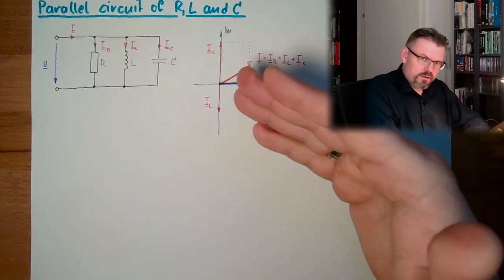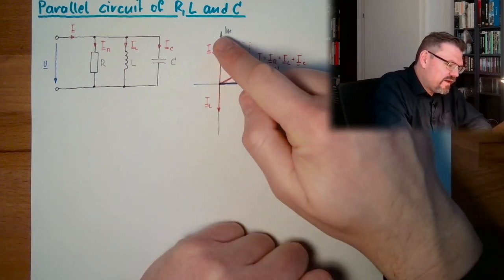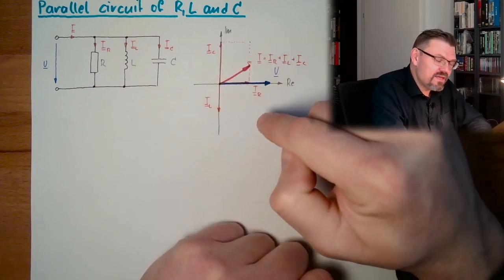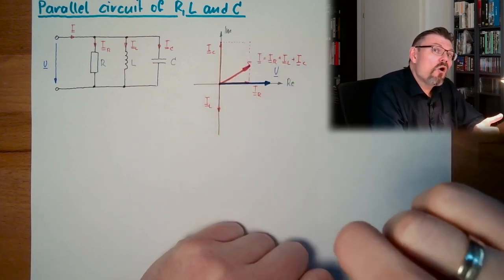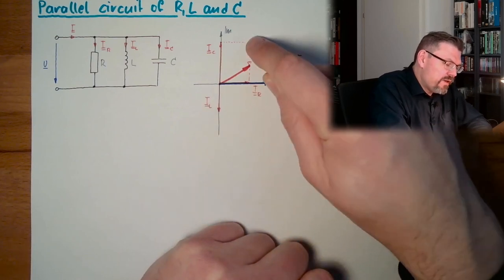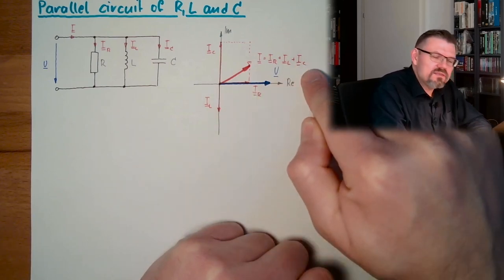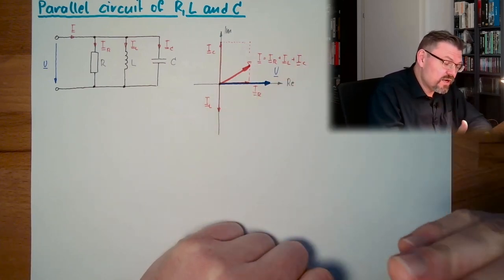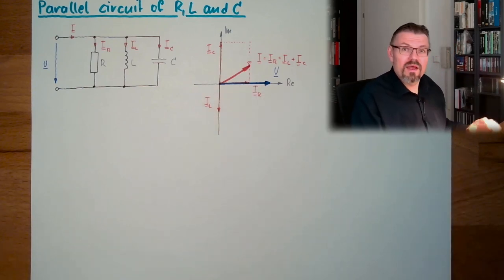Now let's have a look: what if the length of IC and IL are the same? If IL and IC are compensating each other, then we will go up here IC, we will go down here IL, and we end up with IR. If IL and IC are leveling each other, then my I has the shortest possible value and angle zero.